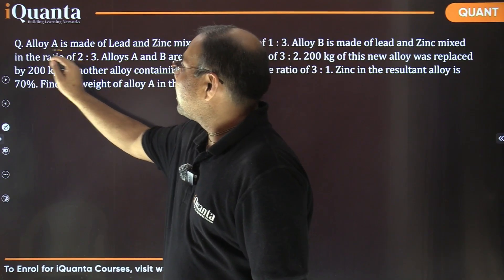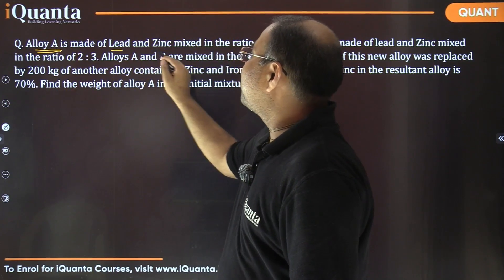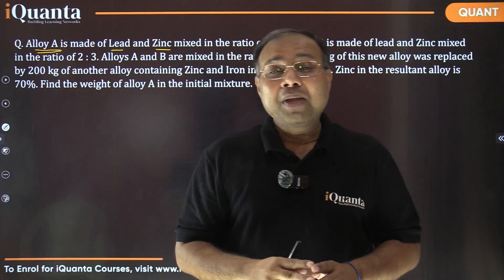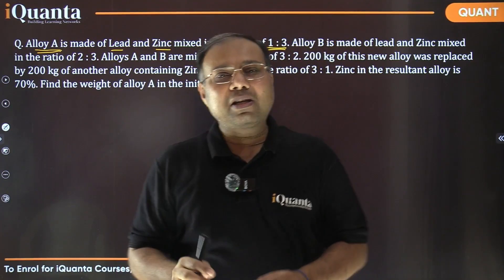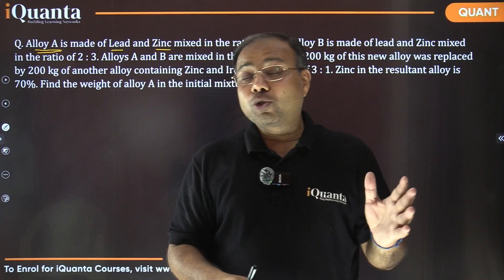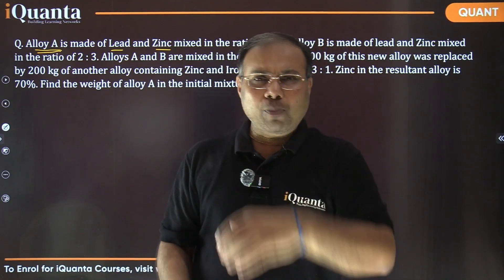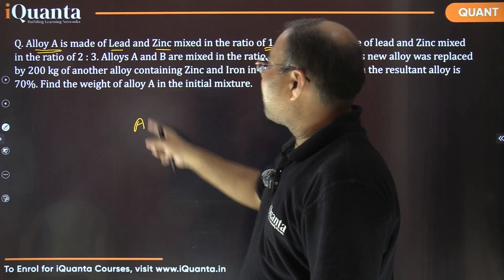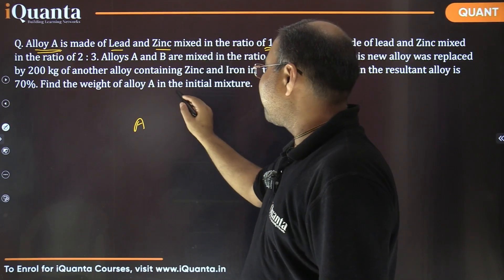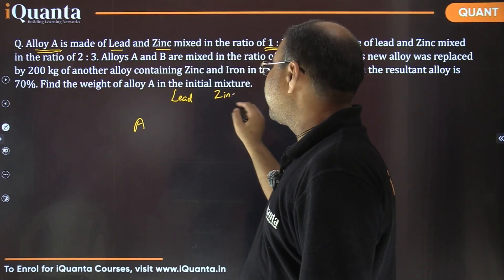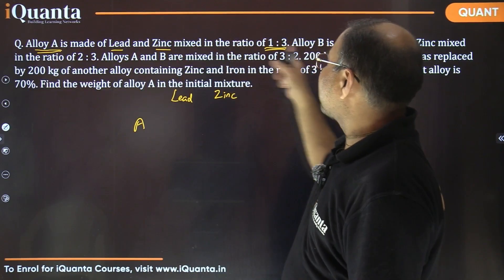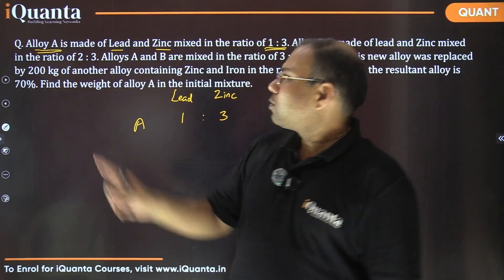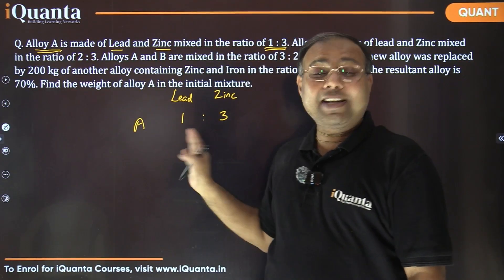Let's read together. Alloy A is made of lead and zinc mixed in the ratio 1:3. Every sentence is very important — how you depict the given information in mathematical format is very helpful. So alloy A is composed of lead and zinc in the ratio 1:3. Whatever quantity we have, they are in the ratio 1:3.